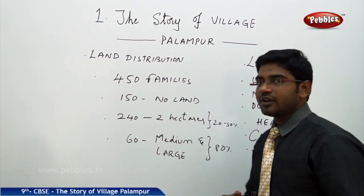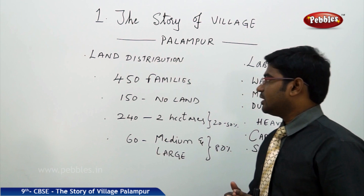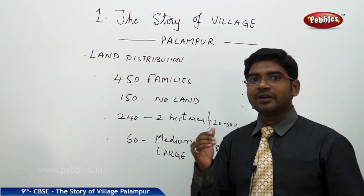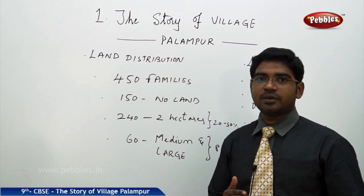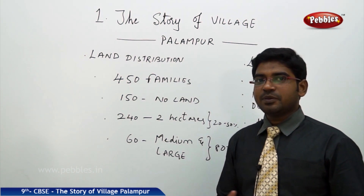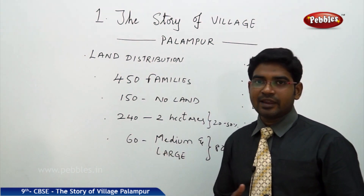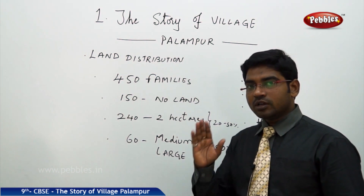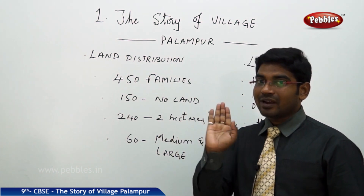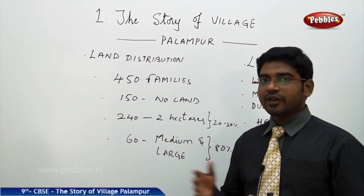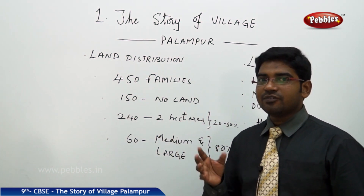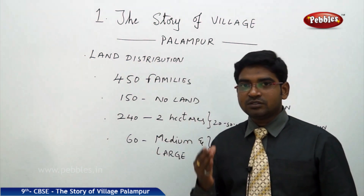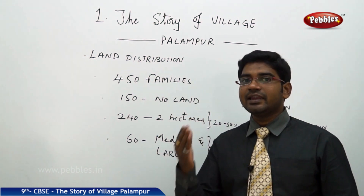Of the 450 families, nearly one third are from scheduled castes and tribes, and these people do not hold any land. And 240 families hold 2 acres or less than 2 acres of land, where it is very difficult for them to even meet their daily requirements.